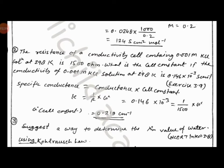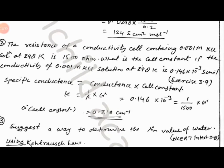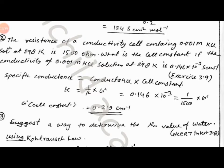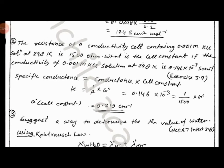What is the cell constant if the conductivity of 0.001 molar KCl solution at 298 Kelvin is 0.146 times 10 to the power minus 3 Siemens per cm? This is exercise 3.9 from the NCERT book.